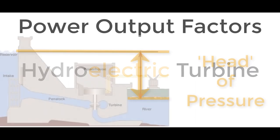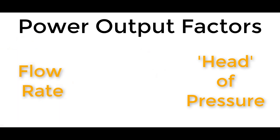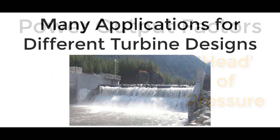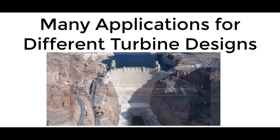The amount of energy that can be converted depends upon several factors such as the available head — this is the height of the water above the turbine — the flow rate through the turbine, and the efficiency of the hydroelectric turbine itself. Hydroelectric turbines can operate at a wide range of pressures and flow rates, but there is no single turbine that can work at all pressures and flow rates, so you have very different and distinctive designs depending upon the operating conditions.